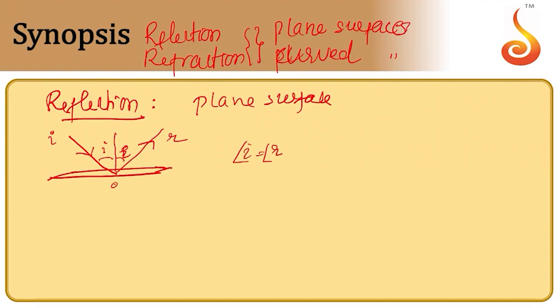Many a times this is written in vector form. Suppose E-cap represents the unit vector along the direction of incidence, N-cap represents the unit vector along the normal, and R-cap represents the unit vector along the direction of the reflected ray. Then R-cap is equal to E-cap minus 2 times (E-cap dot N-cap) N-cap.